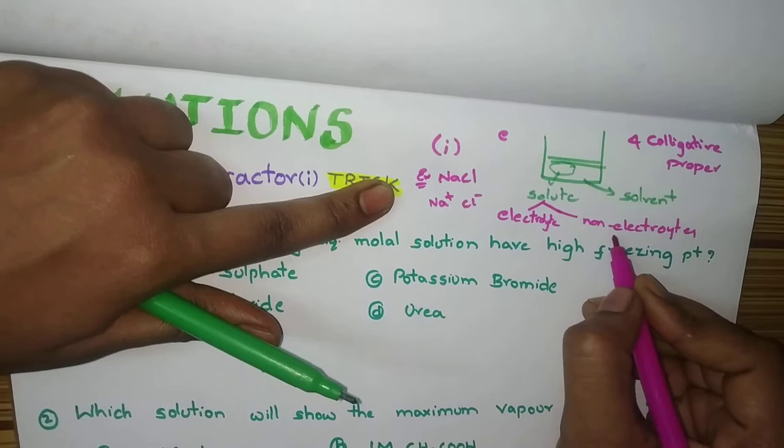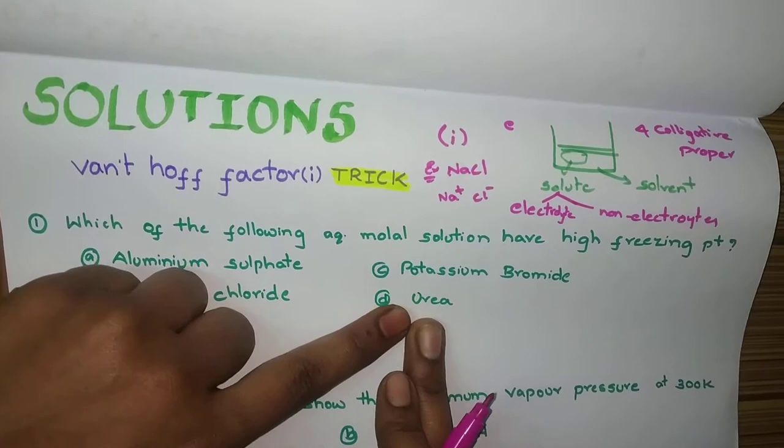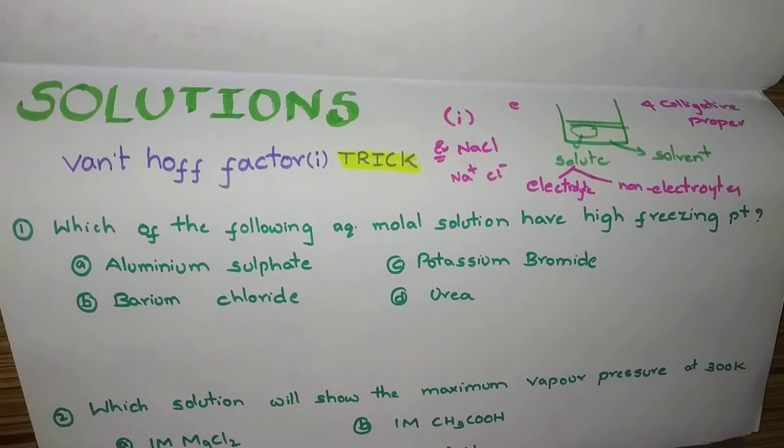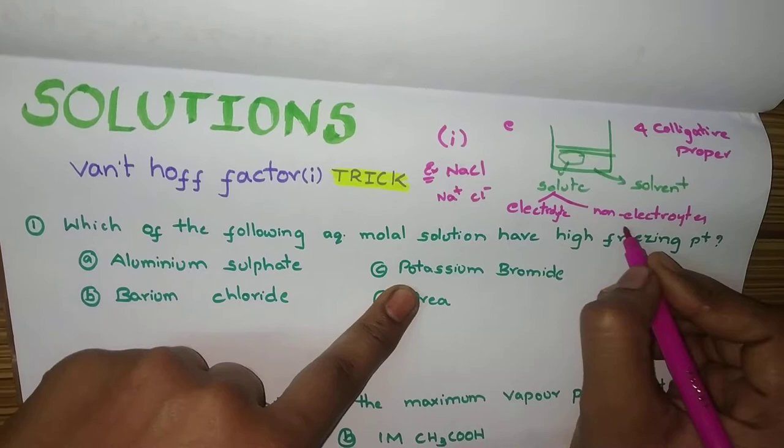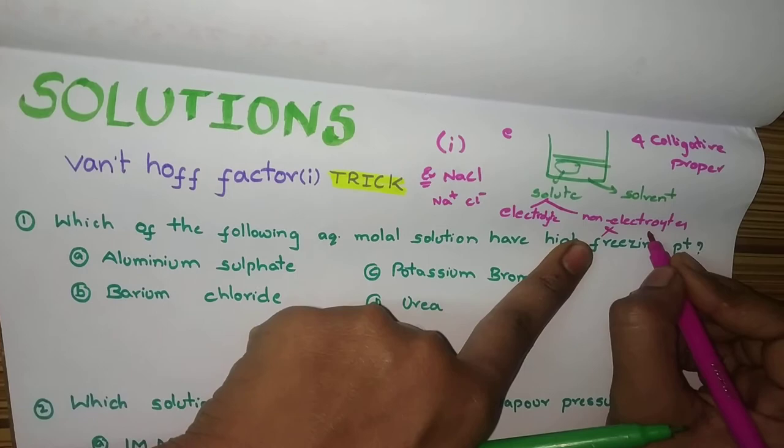For non-electrolyte, that compound, take example, urea. Urea will not dissociate in the solution. It will remain as it is. So, for this, we don't use Van't Hoff factor. For this, there is no Van't Hoff factor. Why? Because, here, i value is 1.